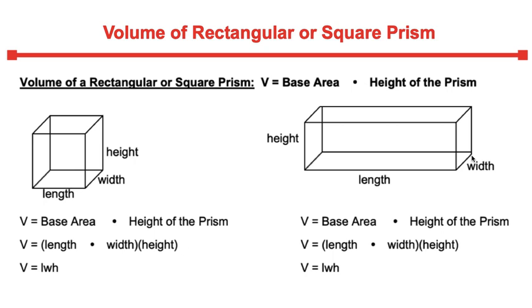So the base area of your tissue box would be the length times the width. So that ends up getting the base area and then you would multiply by how tall that tissue box is or the prism.